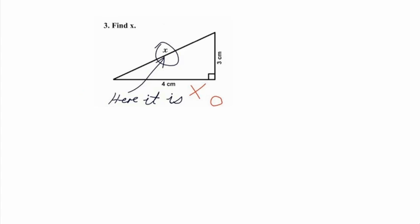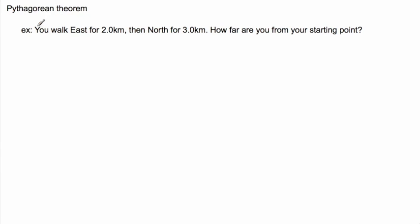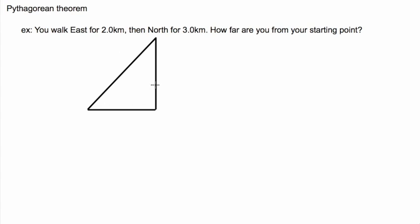There's a classic math joke where someone says 'find x' and the answer is just circling the letter x — but in math we actually calculate it. Let's do an example: maybe you walk east for 2 kilometers and then north for 3 kilometers. How far are you from your starting point? I'll start to draw this — east for 2 km, then north for 3 km, which is a bit bigger so I'll draw it slightly longer.